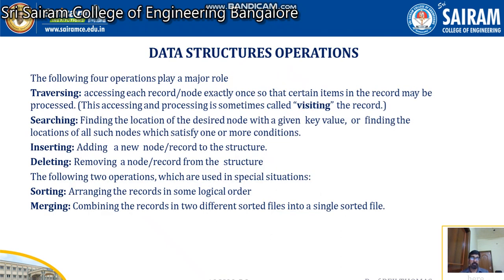Next, what are the operations we can perform with data structures? The first one is traversing — visiting every node, making sure you visit each node only once. Next is searching, which everyone knows — finding the location of the desired node with a given key value. You will be given a key value and you search through the data, whether sequential or any format, to find that location.